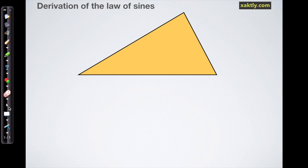Now we're going to start applying trigonometry to non-right triangles by developing the law of sines. We'll start out with a non-right triangle, and I'm going to have a convention of labeling the angles with capital letters and then the opposite side with the corresponding lowercase letter.